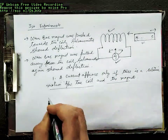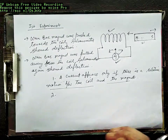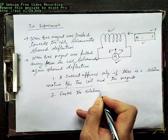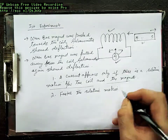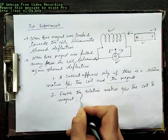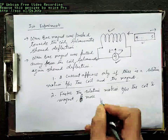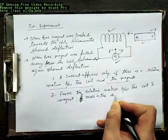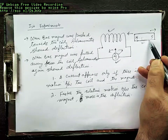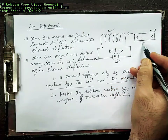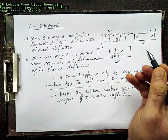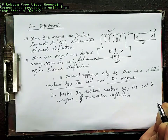Second, it was noted that faster the relative motion between the coil and magnet, more the deflection. This means if you move this magnet faster, it shows more deflection. If you move this magnet slowly, it shows less deflection. If you are not moving this magnet at all, it shows zero deflection. We will come to the reasons for this when we study Faraday's laws of electromagnetic induction.